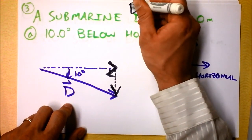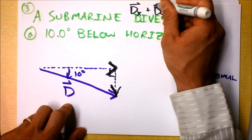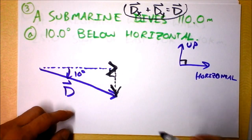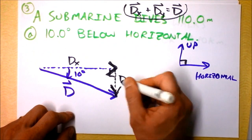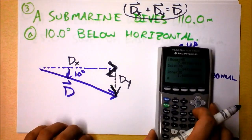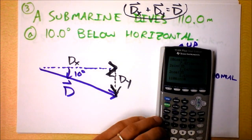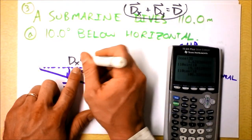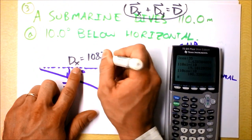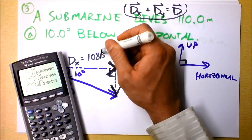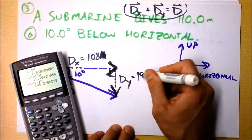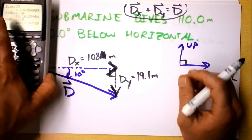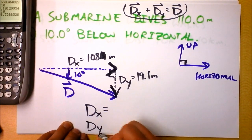The components add up to vector D — if I take D sub x as a vector and add it to D sub y as a vector, I get vector D. That's the nature of components. To find the numbers I calculate 110 times sine of 10 degrees and 110 times cosine of 10 degrees, giving me 19.1 meters and 108 meters respectively. I need to write down dx equals and dy equals clearly.